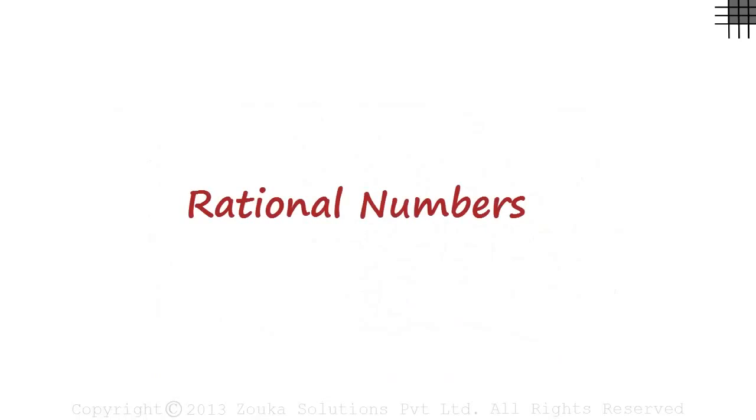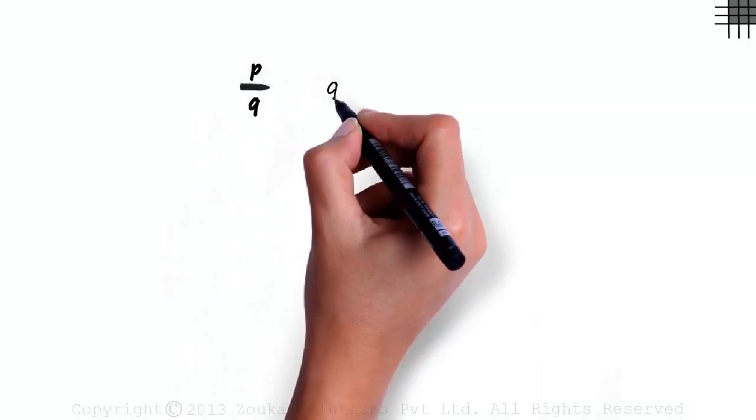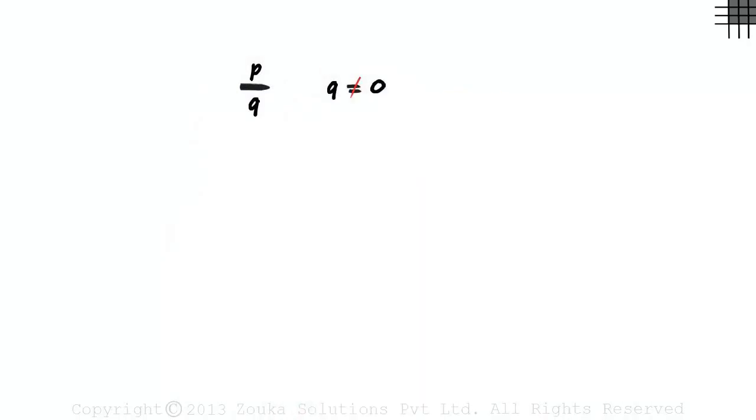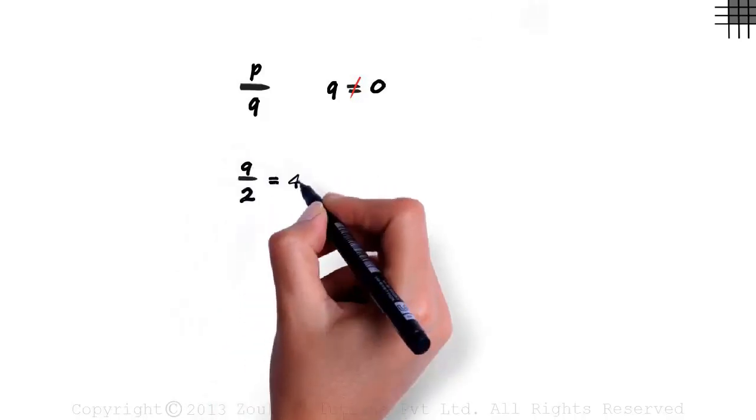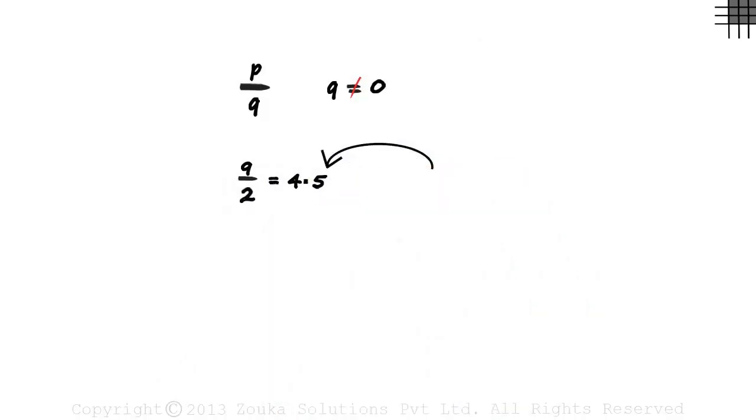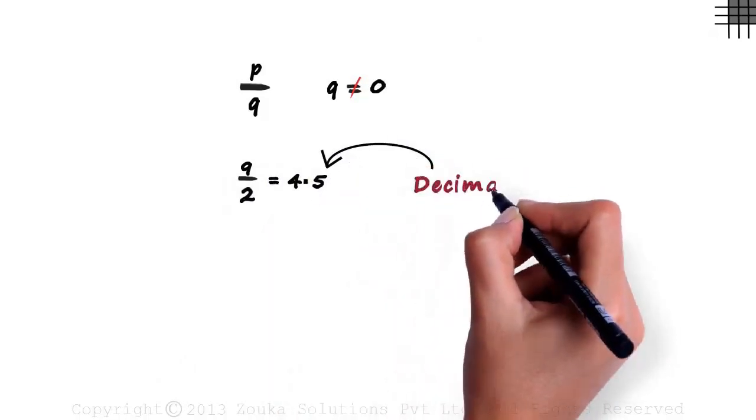We know that the rational number is a number that can be expressed as P by Q, where Q is not equal to zero. This is the traditional definition. An example would be 9 divided by 2. But 9 by 2 can be written as 4.5. What is this form? Yes, it's called the decimal form.